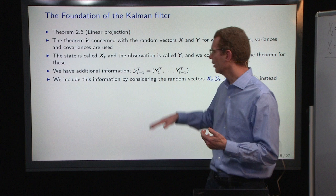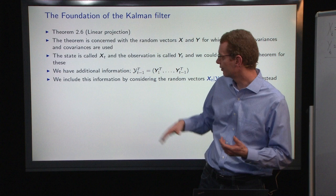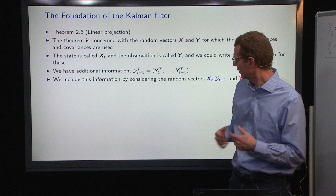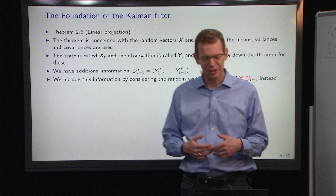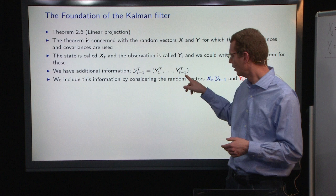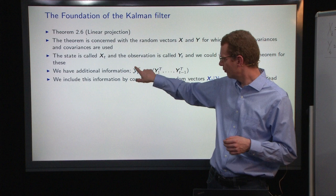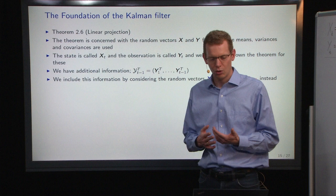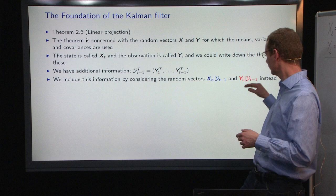Furthermore, the foundation goes back to the very first lecture on the linear projection theorem. The linear projection theorem concerns vectors X and Y, where you look at means, variances, and covariances. We call the state X here, and then we have the observation Y. We can write down expectations for this just using the linear projection theorem. We have to condition on previous values of Y — all observations up to time T minus 1 — and we will look at XT given Y_{T-1} and YT given Y_{T-1}.